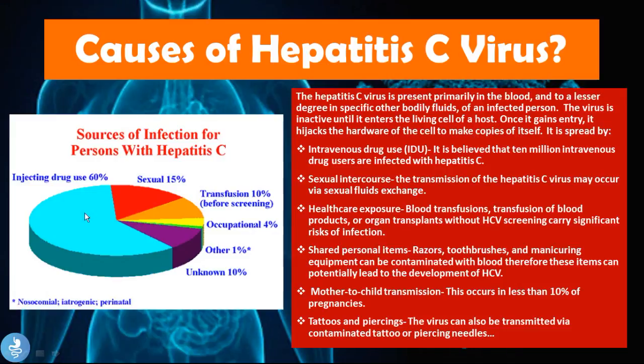Looking at this image, the main cause of the spread of Hepatitis C virus is actually IV drug users. Next in line we have sexual transmission at 15%, then transfusion of blood products, blood, or organ transplants at 10%, occupational or healthcare worker exposure at 4%, and then other or unknown ways such as tattoos and piercings, mother to child transmission, and shared personal items such as razors, toothbrushes, and manicuring equipment.